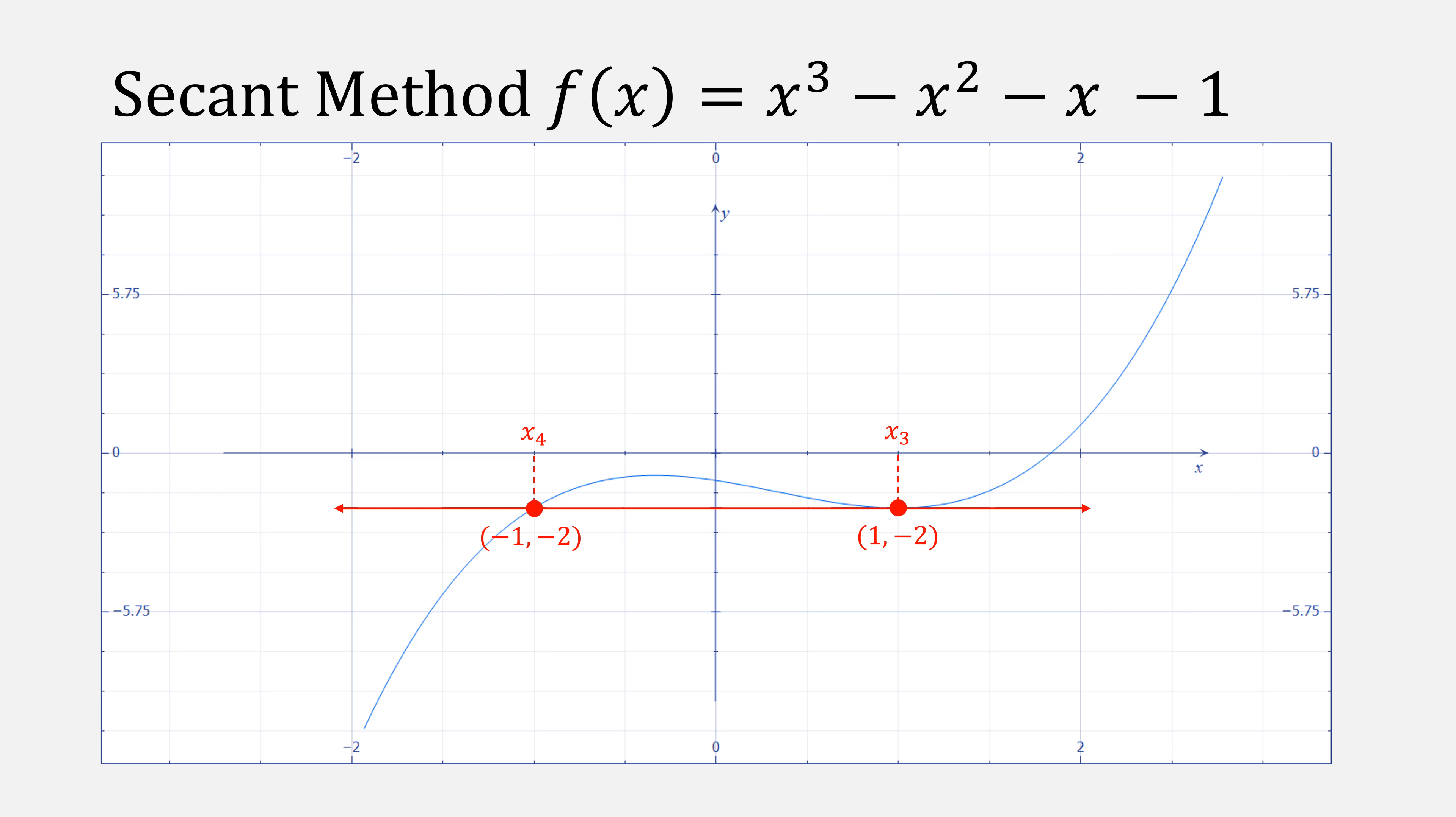Now using x4 and x3, we draw another secant and this one doesn't intersect the x-axis. So this is one of the problems of secant method. We can diverge or divide by zero.